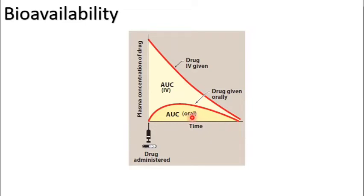For calculating the bioavailability of any route, the AUC of that route is divided by the AUC of the IV route and then multiplied by 100. We divide by the AUC of the IV route because it equals 100 percent.